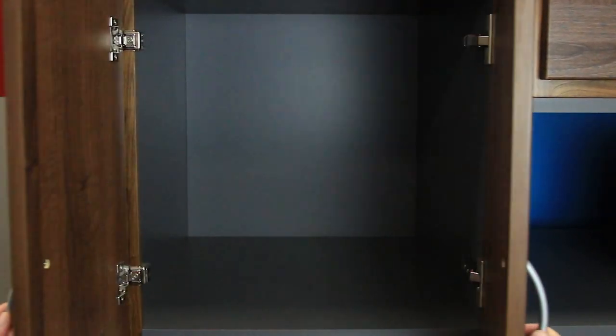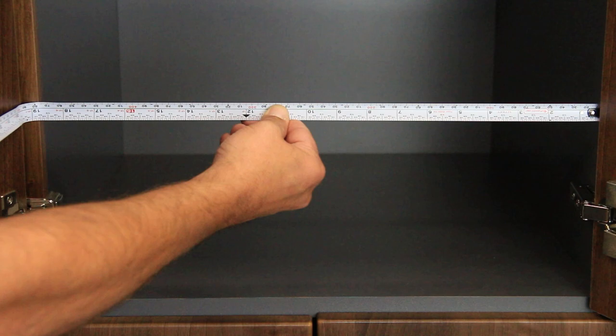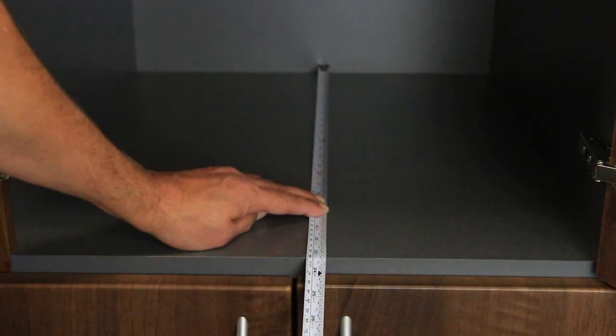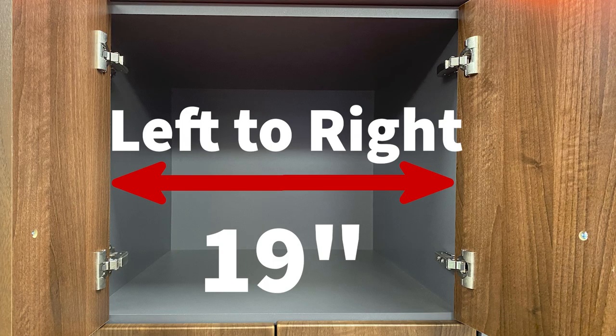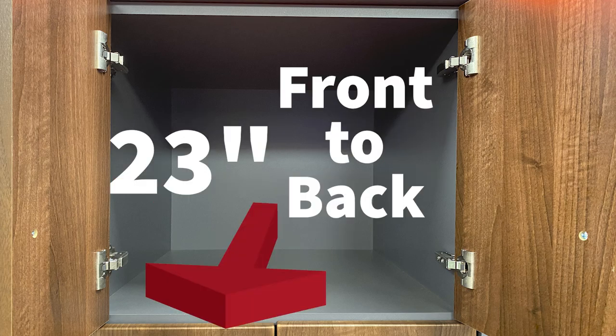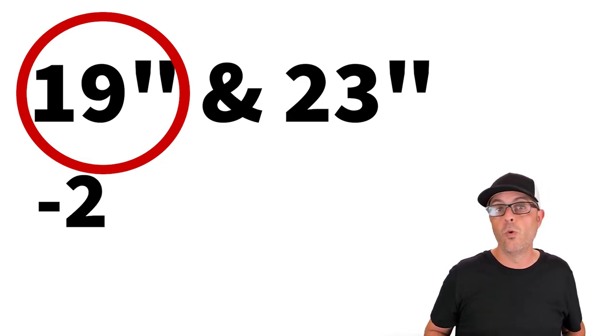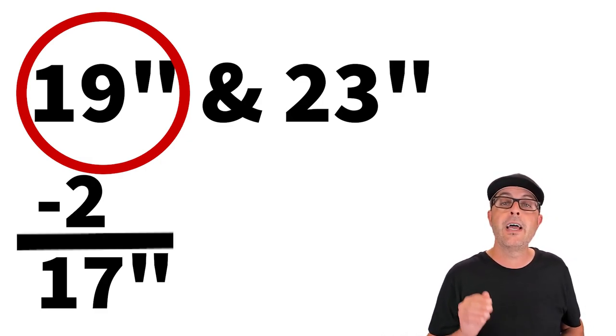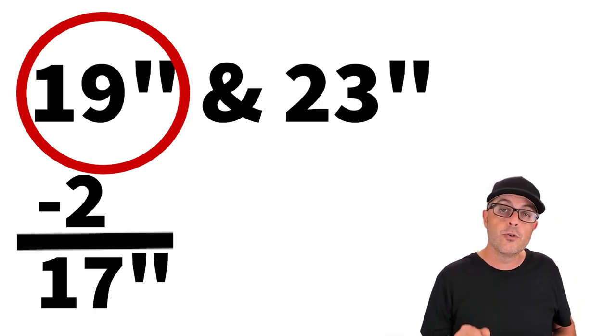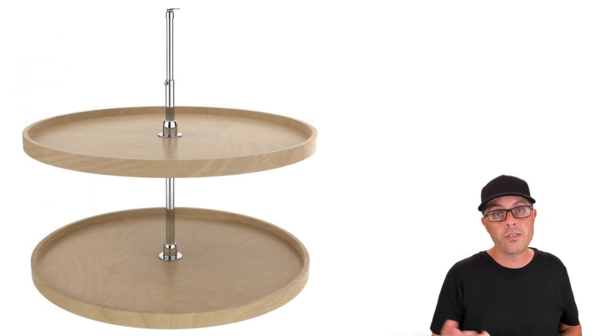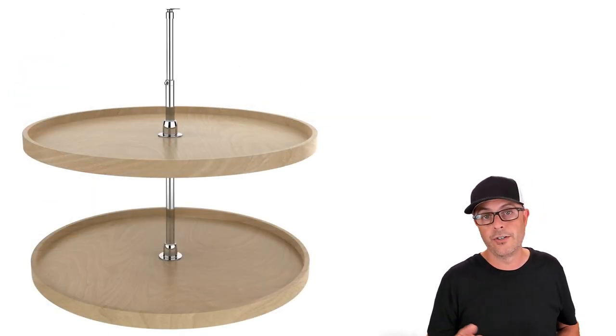When measuring for a full circle Lazy Susan you will need to measure the inside space of the cabinet from left to right and from front to back. Go ahead and write those measurements down. Let's say our left to right measurement is 19 inches and our front to back measurement is 23 inches. Take the smaller measurement of the two, then subtract one or two inches from that measurement and order the Lazy Susan that is closest to that size without selecting a larger size.